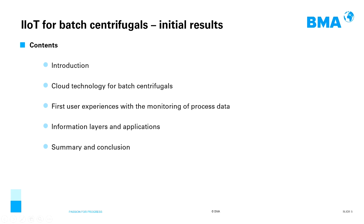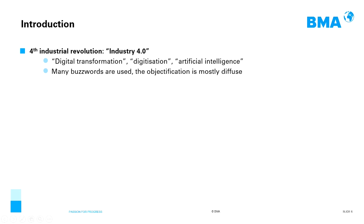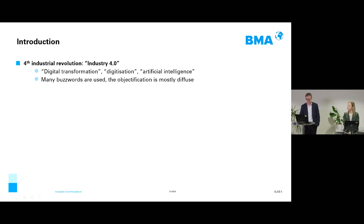For introduction, I will start with some notes and explanations. We find ourselves already in the 4th Industrial Revolution. An internationally known expression founded by the German Chamber of Commerce is Industry 4.0. There are some other buzzwords along with what we use in this context: digital transformation, digitization, artificial intelligence. There are many such buzzwords, but we do not really know the objectification of this — it is mostly diffuse.